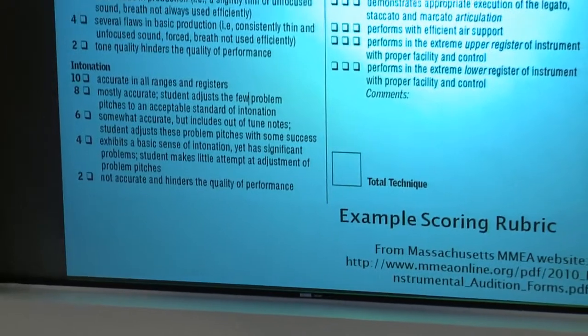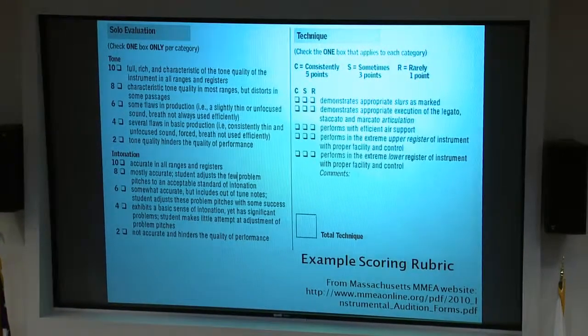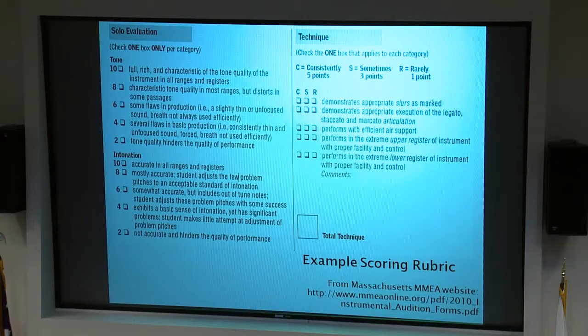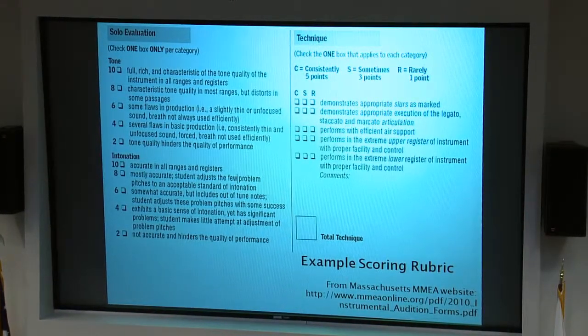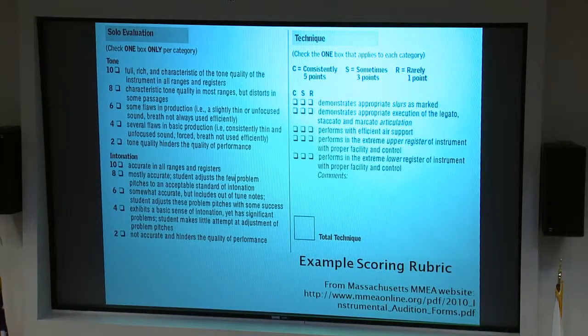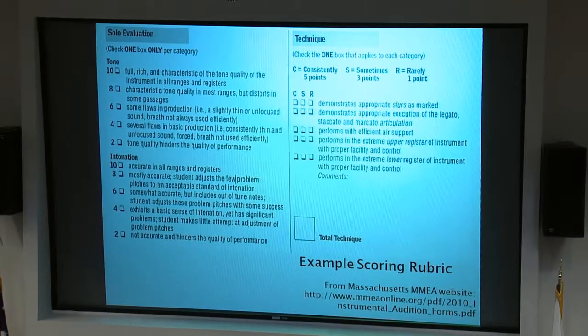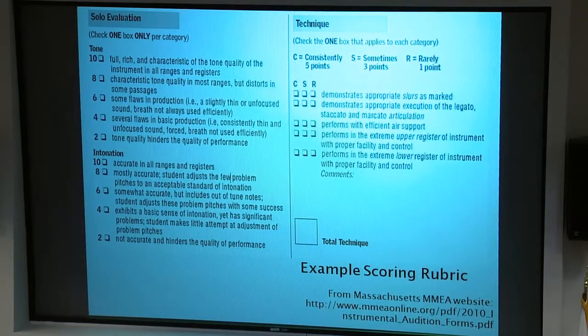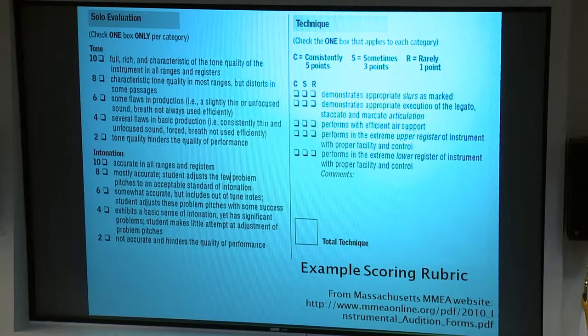This is an example grading sheet — I took this from the Massachusetts MMEA website — looking for things like tone, intonation, and technique through the entire range of the instrument. I've done these auditions a couple of times and they're really hard. They also have a section for melodic accuracy — how well you can actually play the notes on the page — and to score ten in that section, I think at best you can miss like one or two notes. So they're really looking for high quality musicians.